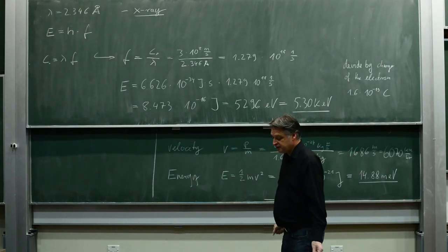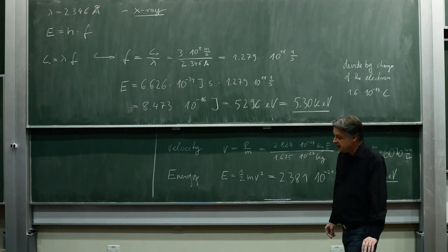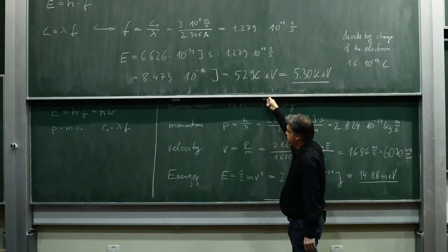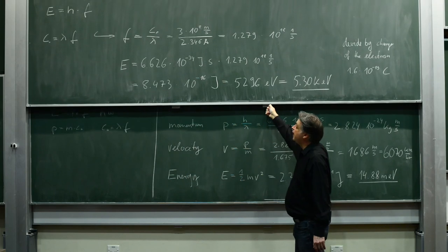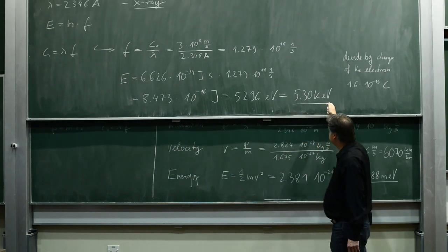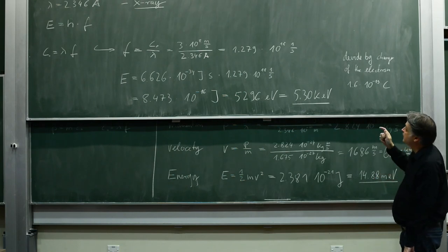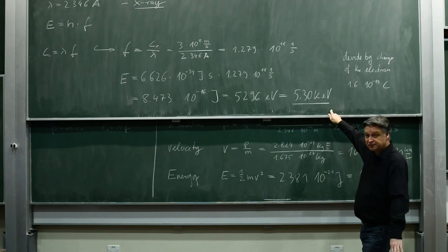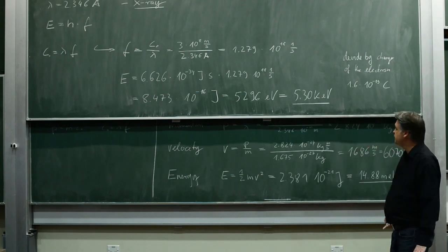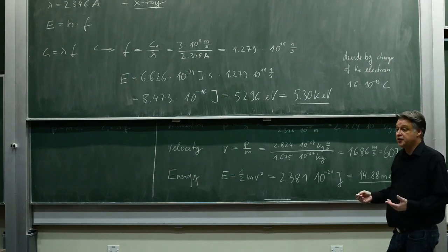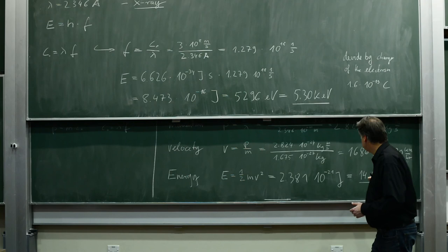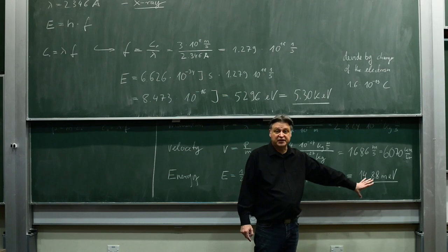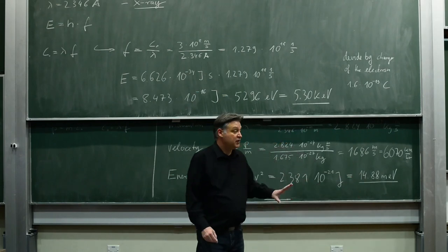Calculation for light or x-ray is fundamentally different from the calculation for particle waves — never mix this up. Comparing: for x-ray at 2.346 Å, the energy is about 5,000 electron volts; for an electron beam, it would be on the order of a couple of electron volts; and for neutrons, about 15 millielectron volts. The energy range is totally different for these three cases.